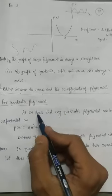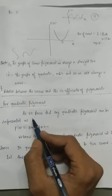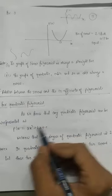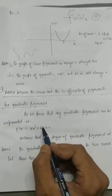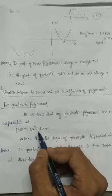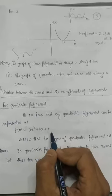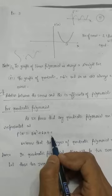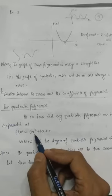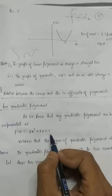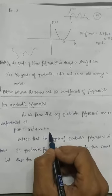As you know, any quadratic polynomial can be represented as p(x) = ax² + bx + c, where a cannot be 0 and a, b, c are real numbers.